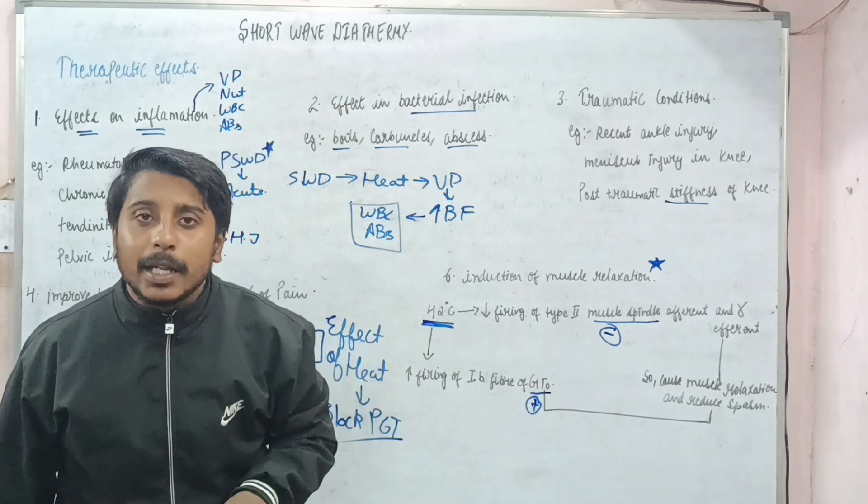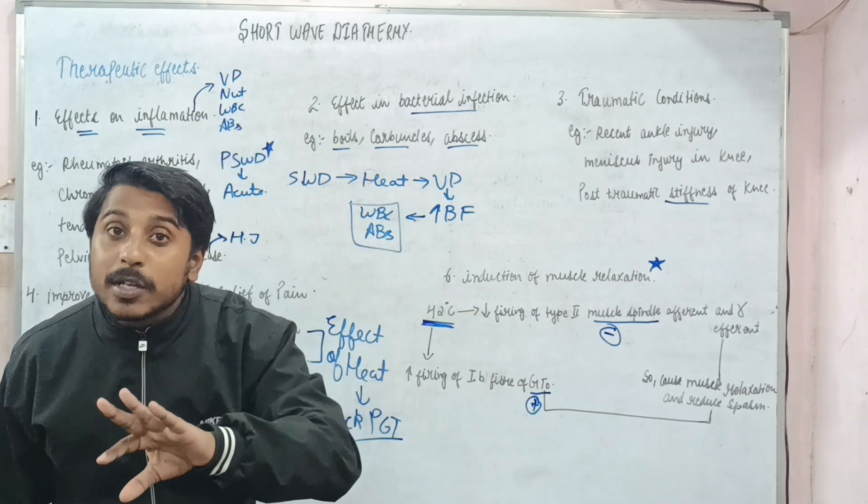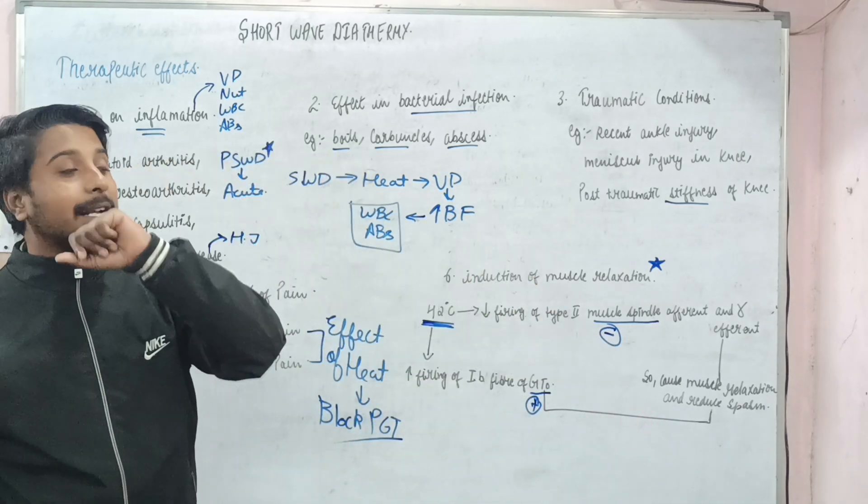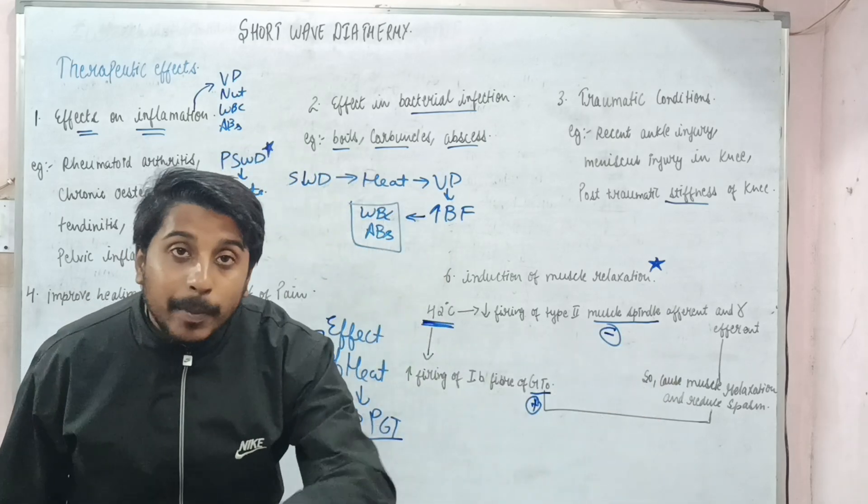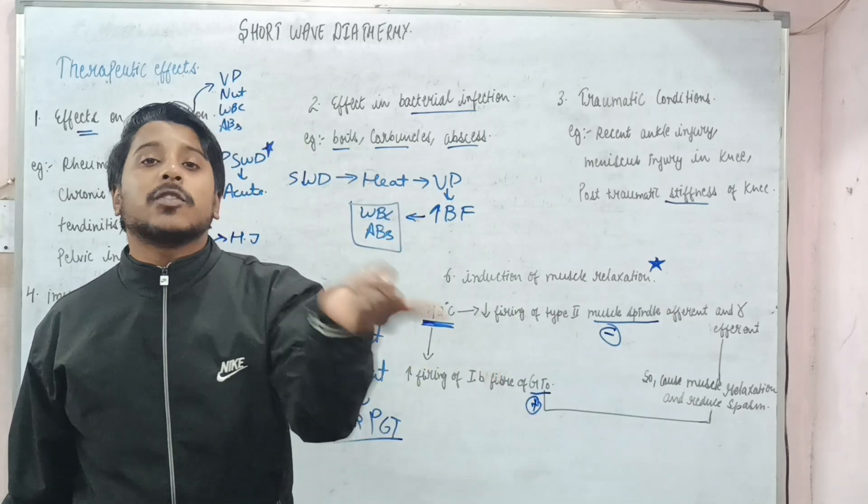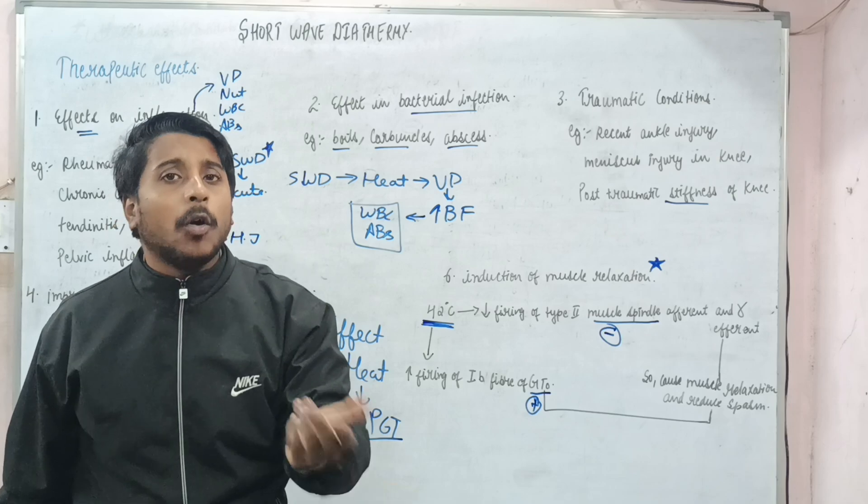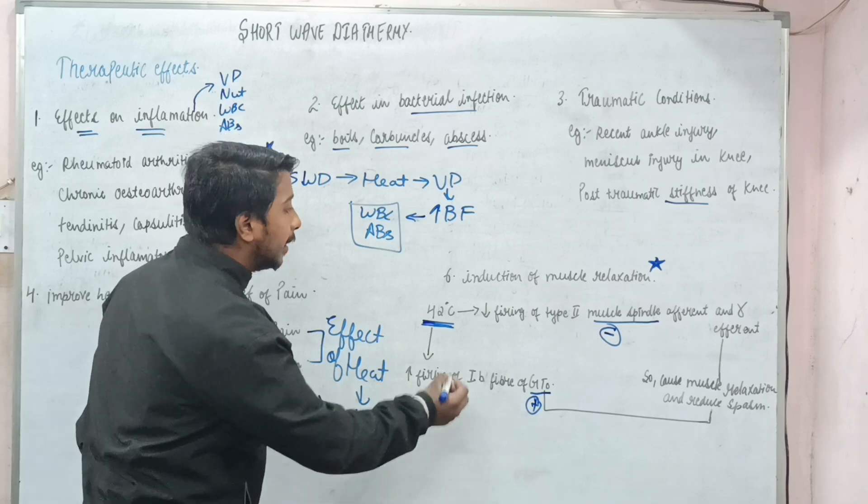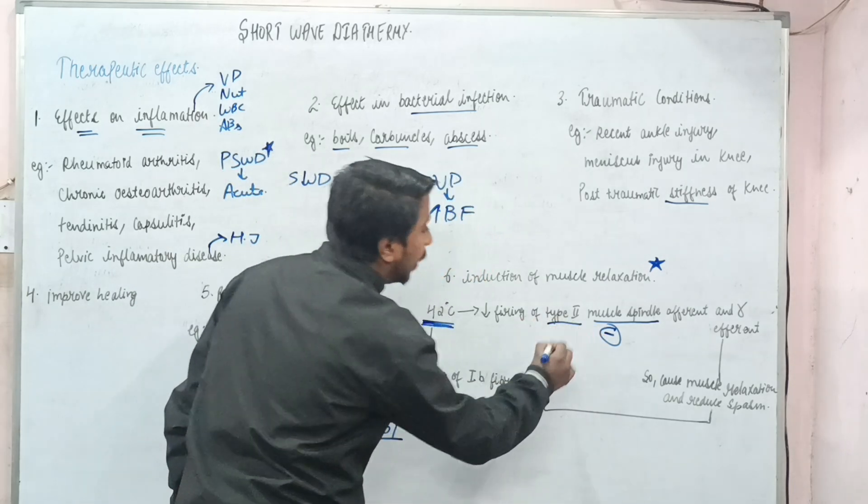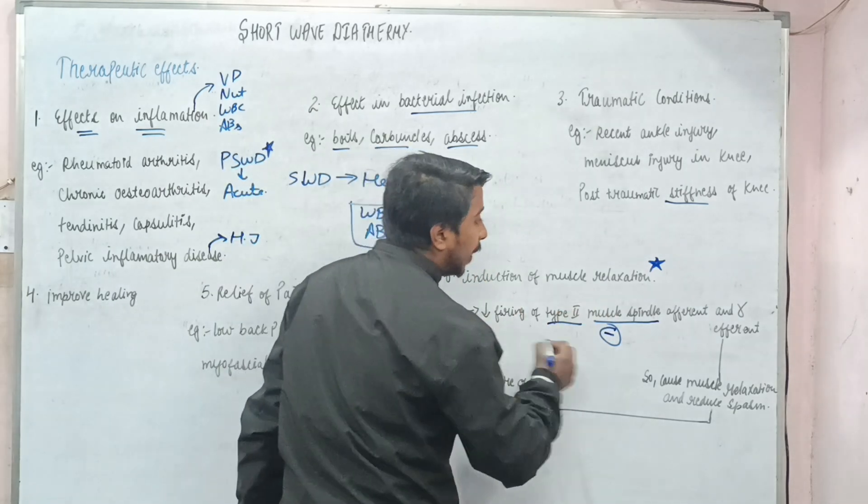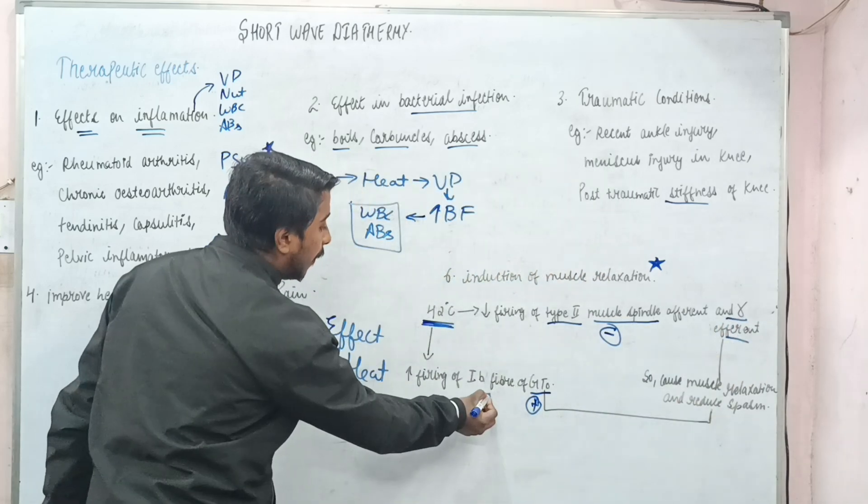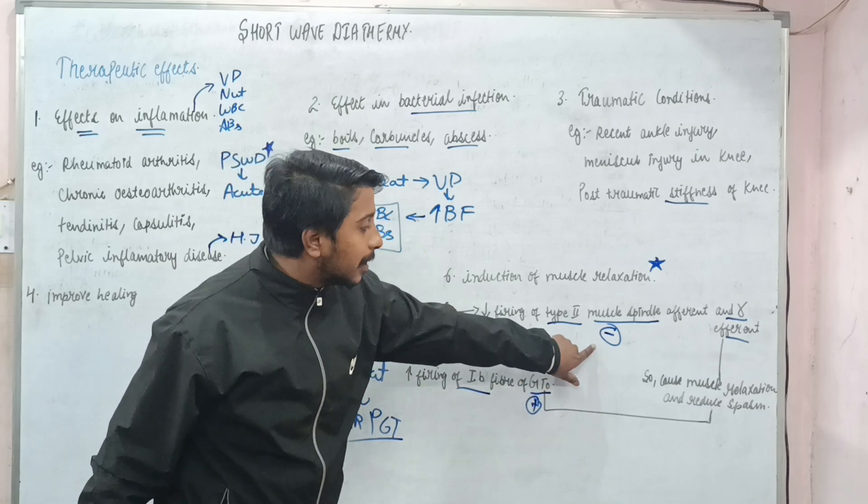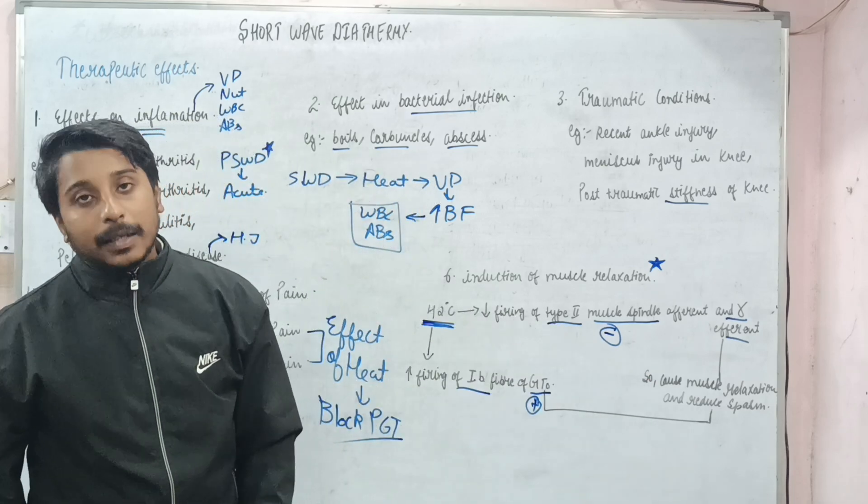Normally when GTO was stimulated, it was causing relaxation. We will stimulate it more to cause muscle relaxation. But muscle spindle, normally when stimulated, was causing contraction. But we don't want contraction, we want relaxation. So it will be inhibited. These are the names of their fibers - it has type 2 fiber (afferent and gamma efferent), and this has 1B fiber. So these have stimulation, these have inhibition, causing muscle relaxation.